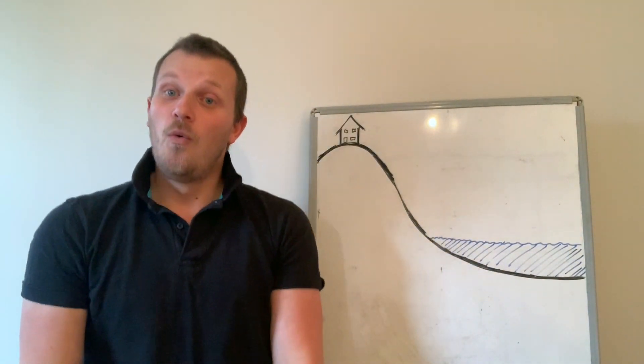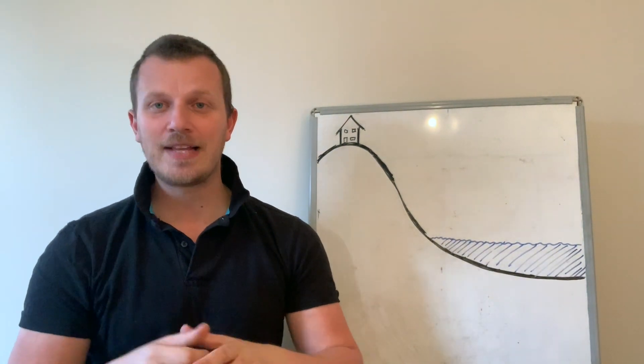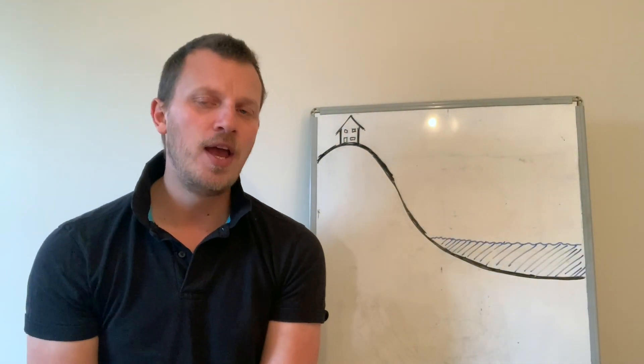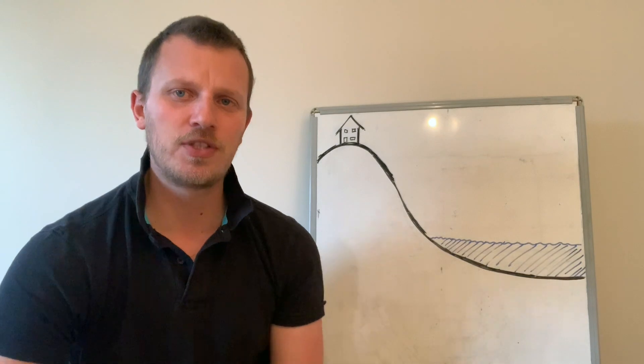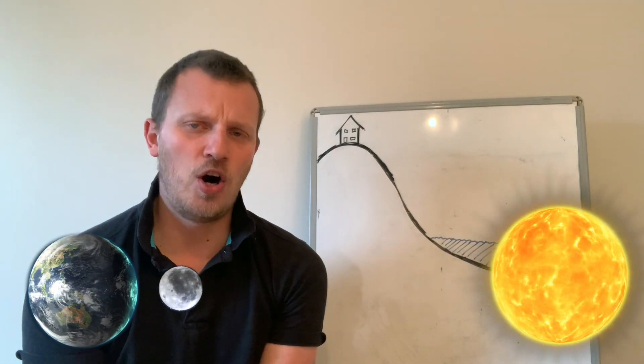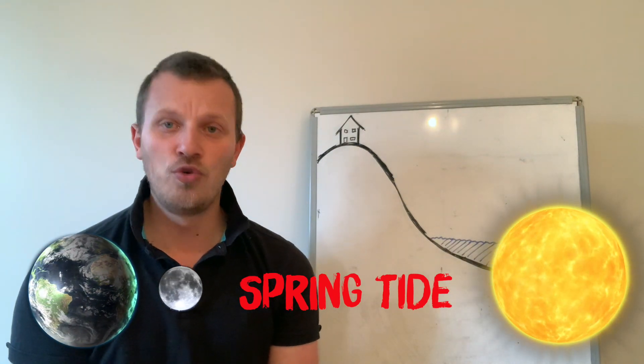Now with the earth spinning, the moon orbiting and the earth and the moon orbiting the sun, we get different types of tide. If the moon and the sun are all in a line then you're going to get something called a spring tide. Now a spring tide, when the water comes in, it will probably come in extra high. So it will be higher than normal.